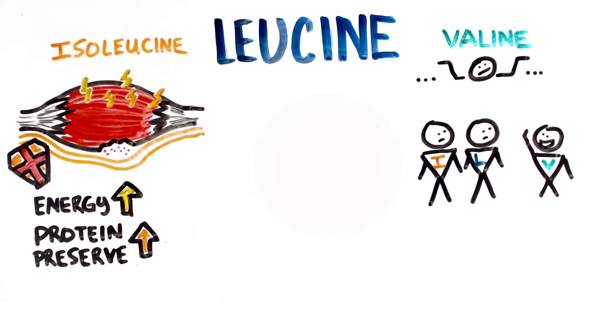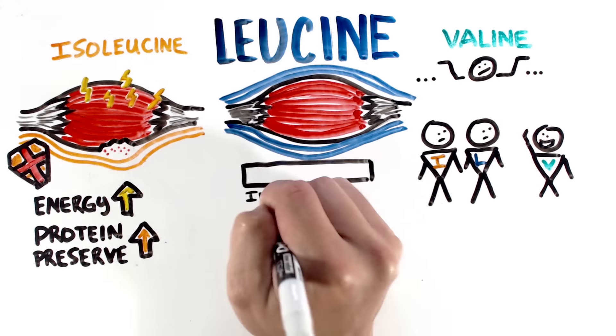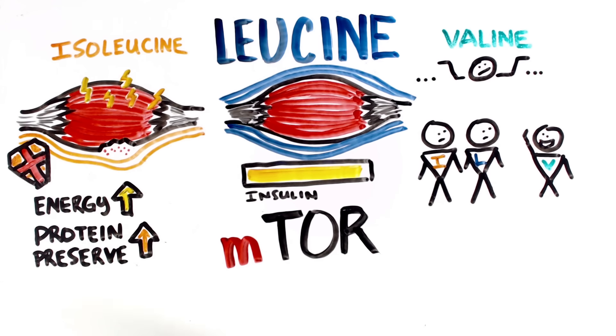Then there's leucine, which is the main BCAA. It helps preserve lean mass, increase insulin levels, and most importantly, it activates mTOR, which promotes muscle growth.